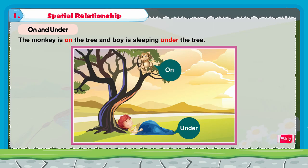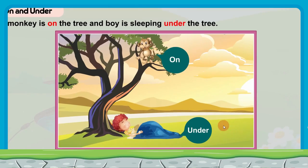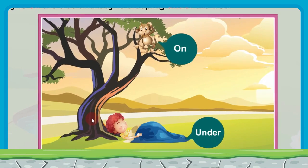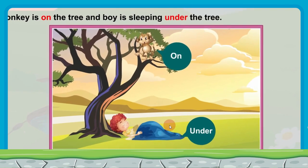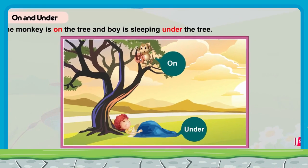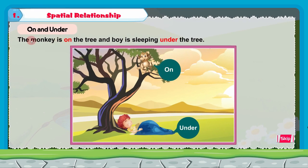Now let us do the next topic in our first chapter, spatial relationship: on and under — O-N on and U-N-D-E-R under. In this picture you can find a monkey, a tree, and a boy who is sleeping. The monkey is on the tree — this is on. The boy is sleeping under the tree — U-N-D-E-R under. The monkey is on the tree and the boy is sleeping under the tree.